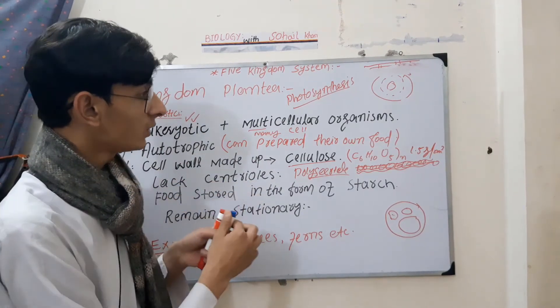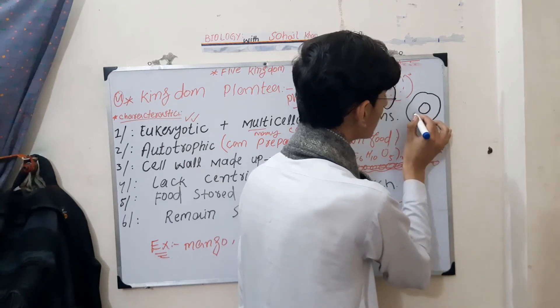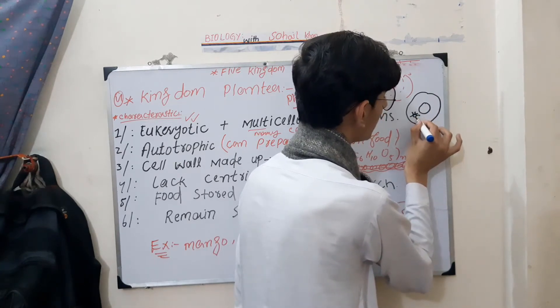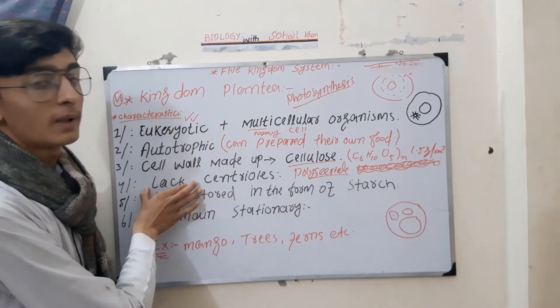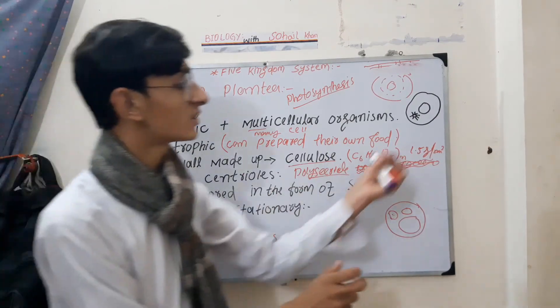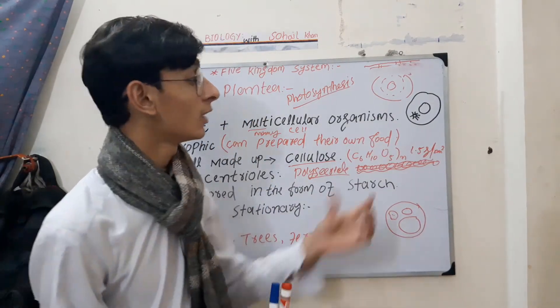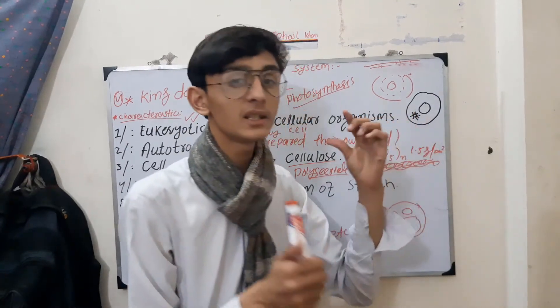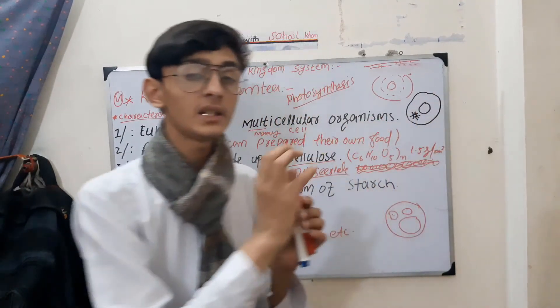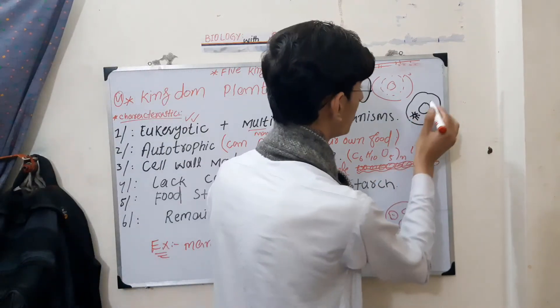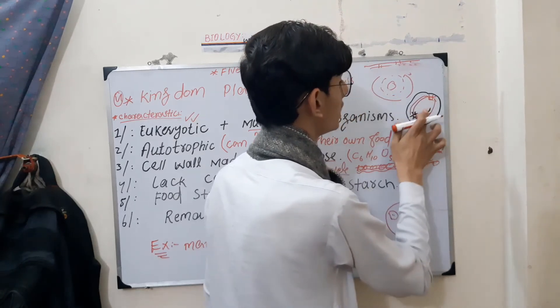Centrioles are present in animal cells. Animal cells have this fiber structure called centriole. Plants do not have centrioles. Centrioles are organelles in animal cells. They play a role in cell division.